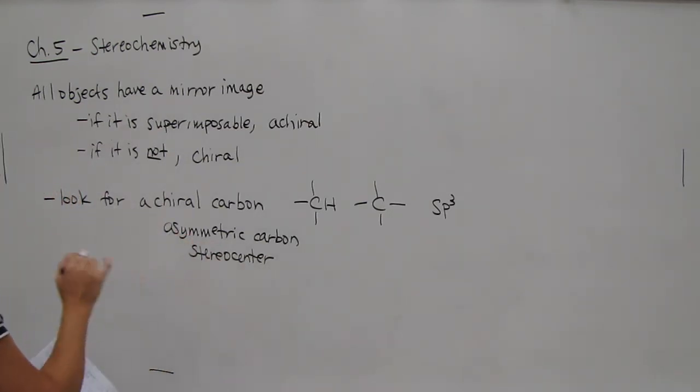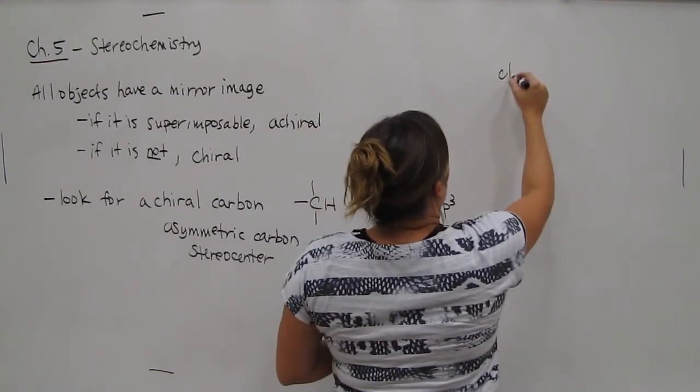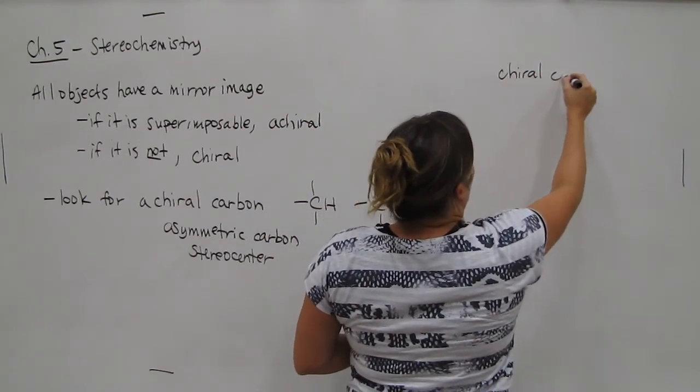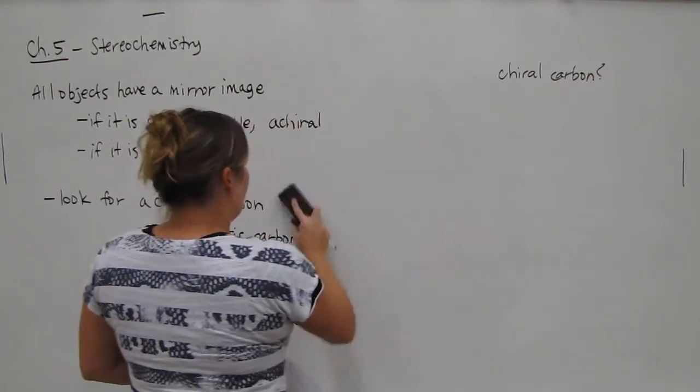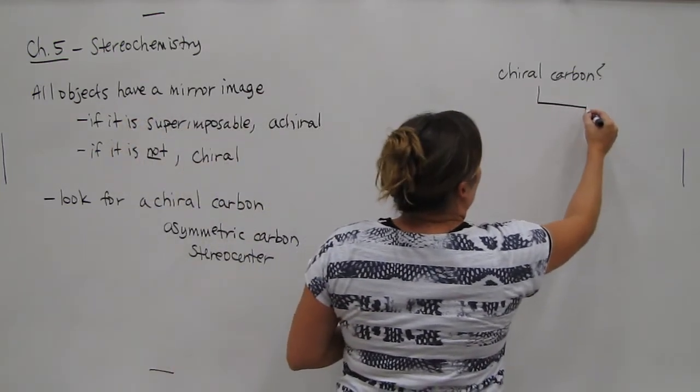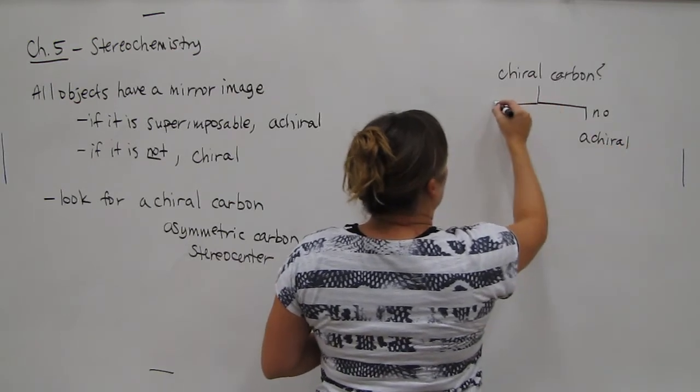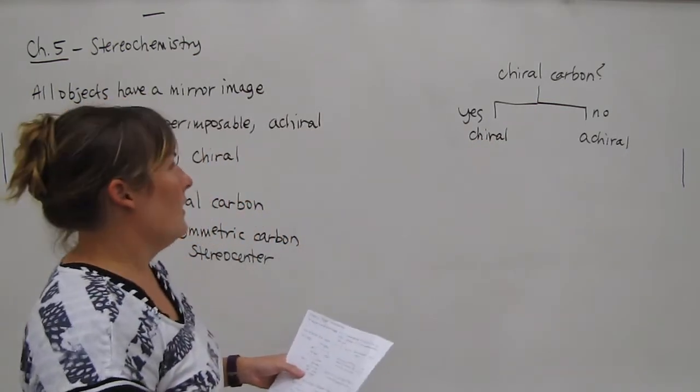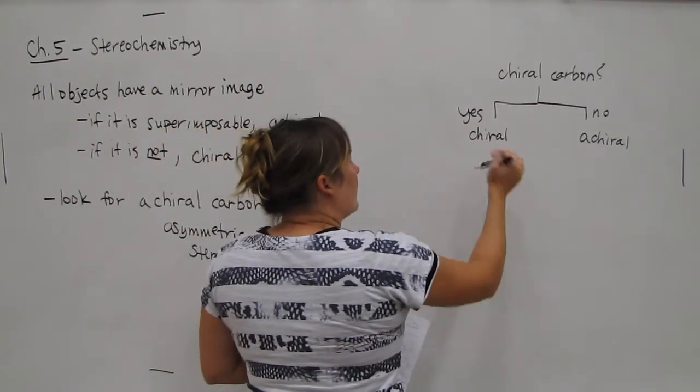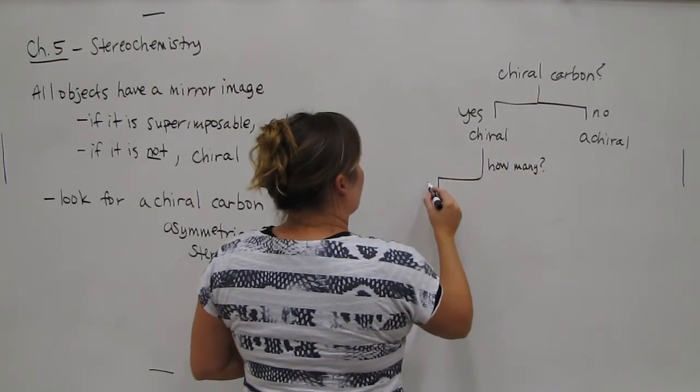So at this point, we had talked about a flow chart in class. So let's recreate that briefly. For the flow chart for chirality, you want to ask yourself, do I have a chiral carbon? If your answer to this is no, then your molecule is achiral. If your answer to this is yes, then your molecule is chiral. If you're on the left side, then you ask how many.